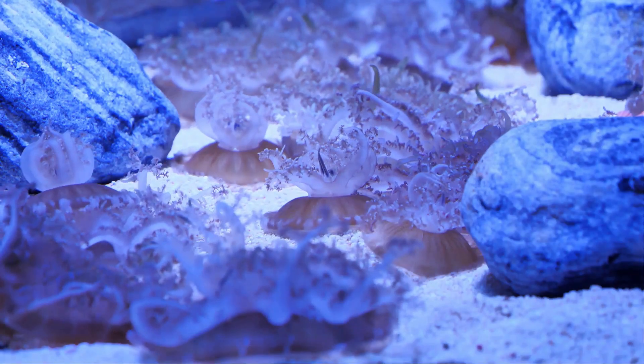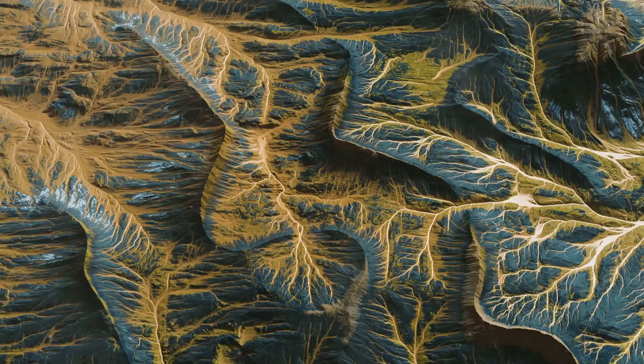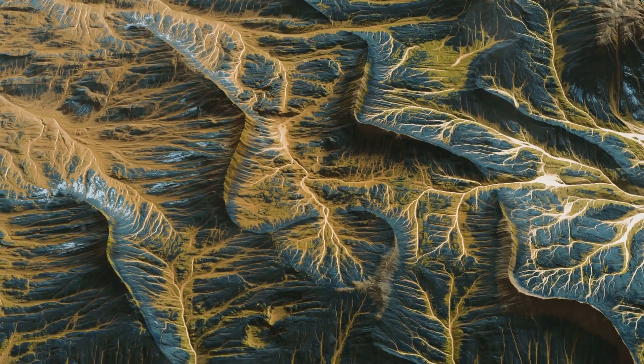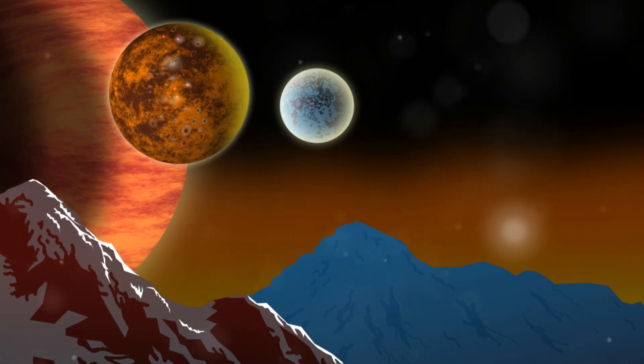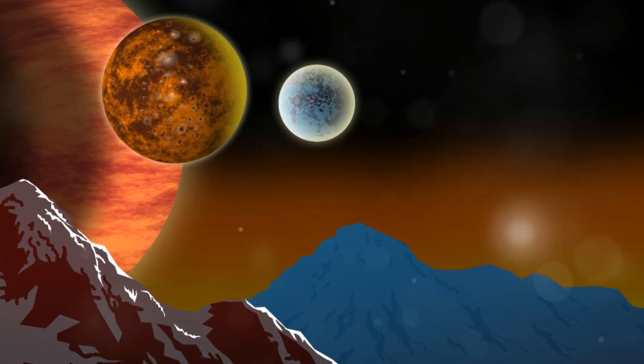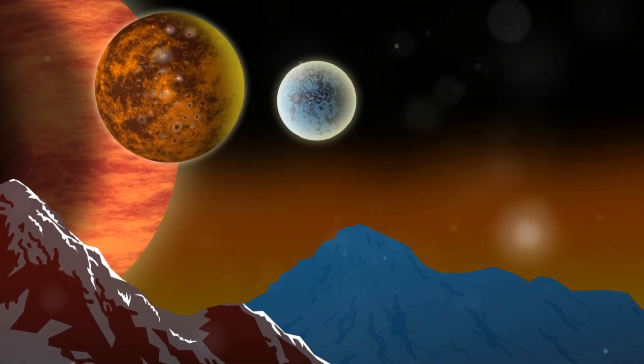It thrives in the most extreme environments on Earth, from the depths of the oceans to the scorching heat of volcanoes. It's conceivable that life could find a way to flourish on this super-Earth, potentially evolving unique adaptations to cope with the variable light and heat from its three suns.